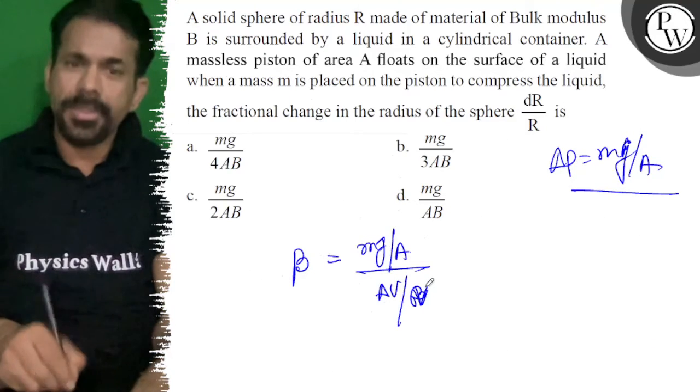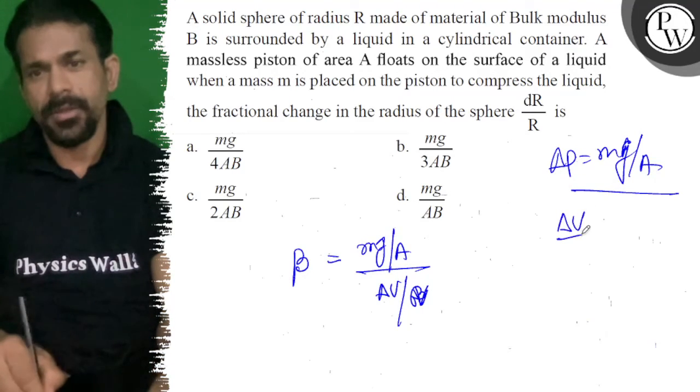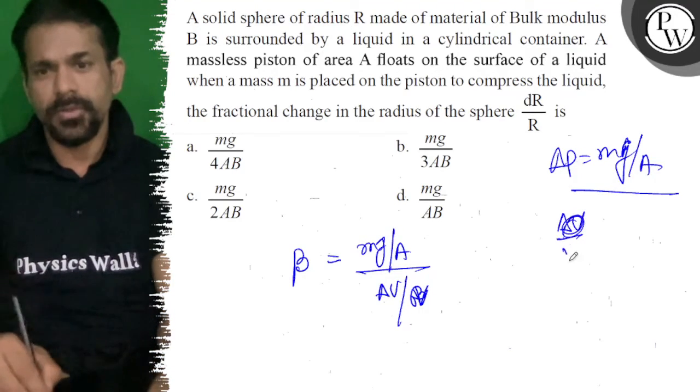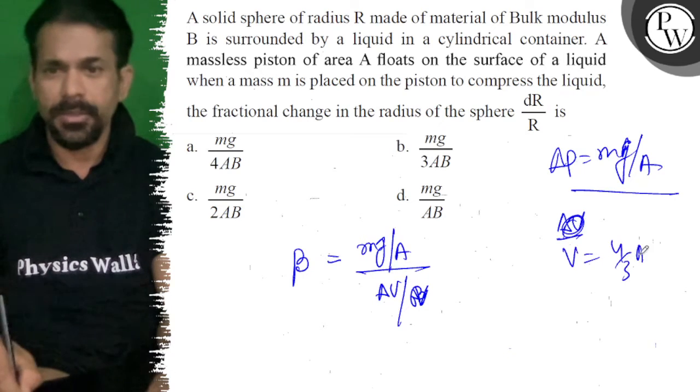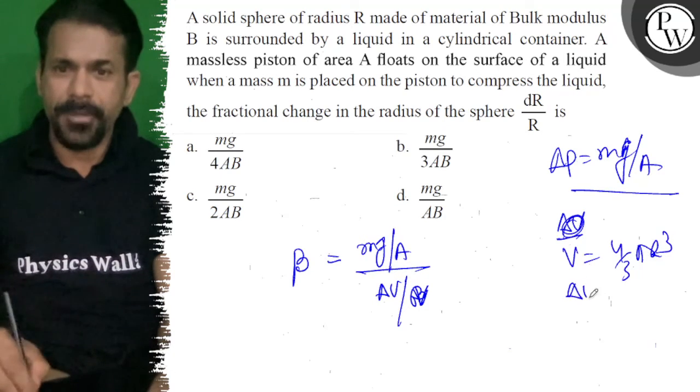So del V by V. We know that V is 4 by 3 pi R cube, so del V by V is nothing but 3 del R by R.